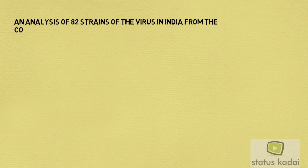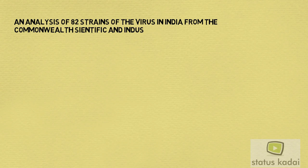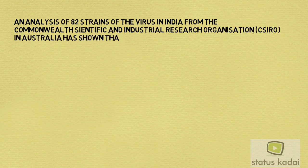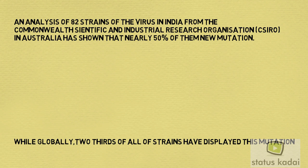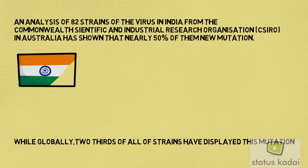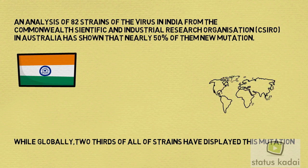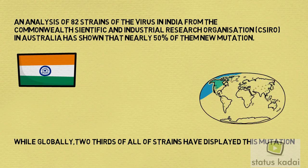An analysis of 82 strains of the virus in India, from the Commonwealth Scientific and Industrial Research Organisation (CSIRO) in Australia, has shown that nearly 50% of them have the new mutation. While globally, nearly two-thirds of all strains have displayed this mutation.